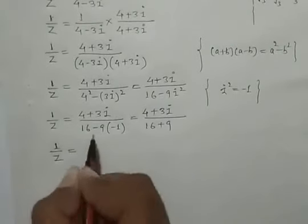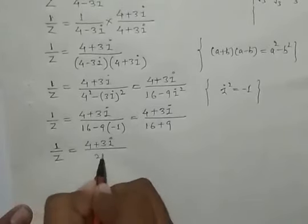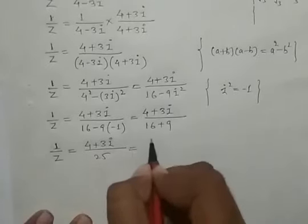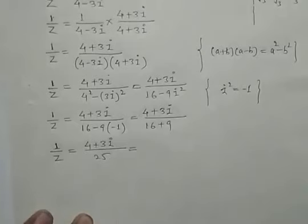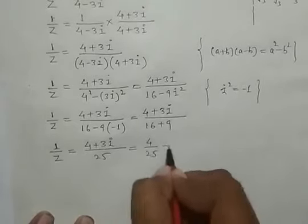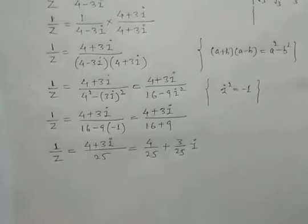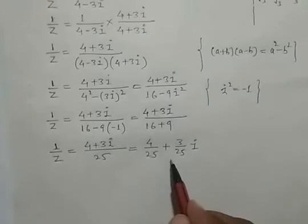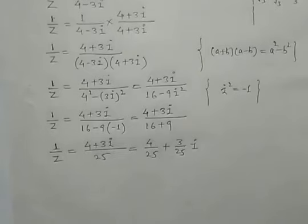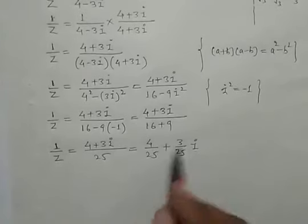So 1 by z is equal to 4 plus 3 iota upon 16 plus 9, which is 4 plus 3 iota upon 25. When you distribute the 25 denominator to the real part and imaginary part, it becomes 4 by 25 plus 3 by 25 iota. This is the multiplicative inverse of the given complex number 4 minus 3i, and it is in the form a plus ib.